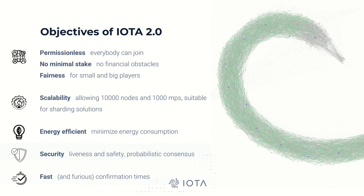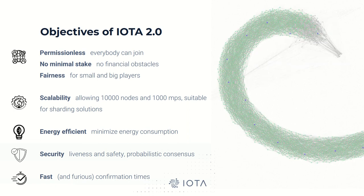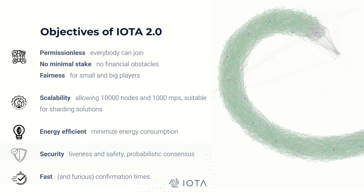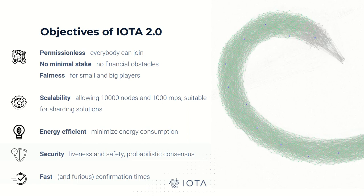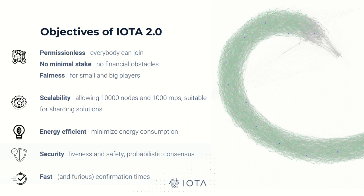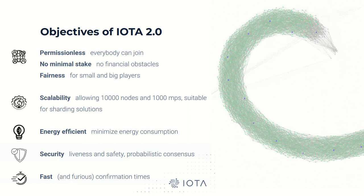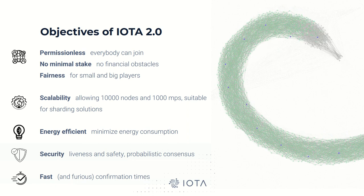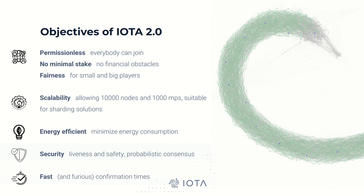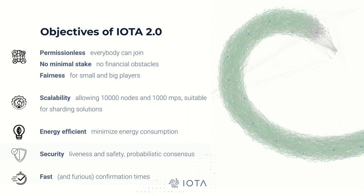I would like to introduce the objectives of the IOTA 2.0 protocol. Permissionless means that users do not require permission to use our protocol, there is no minimal stake requirement, and assets should be fair for both small and big players. Scalability means we want to allow a large number of nodes while throughput is still high and confirmation is fast. Energy efficiency means we want to remove proof of work as much as possible. Security means we need to guarantee liveness and safety even if there are adversaries. In this protocol, we achieve security by using probabilistic consensus. Finally, we want to ensure fast confirmation and progression of the ledger state.